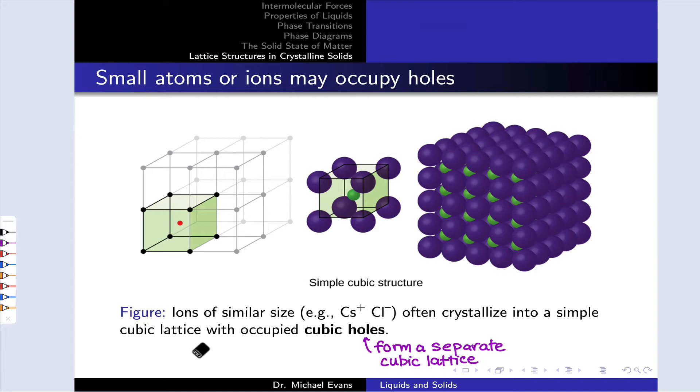They will often crystallize into a simple cubic lattice where the somewhat smaller, typically cation, is occupying a cubic hole, and actually the cations themselves form a completely separate simple cubic lattice. The anions are forming a simple cubic lattice, but the cations are as well. Those cations are nestled into a hole at the center of the simple cubic lattice.